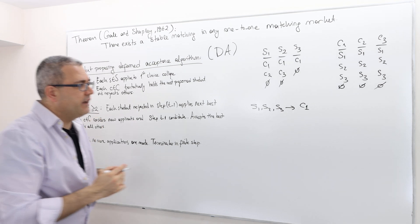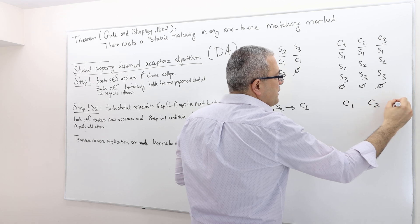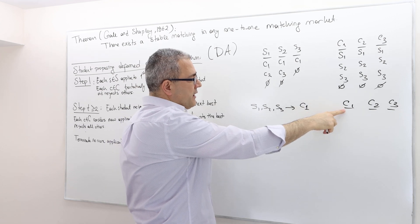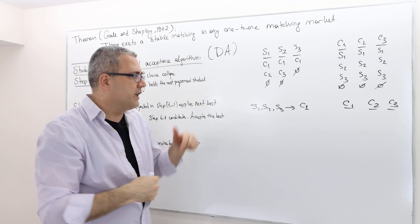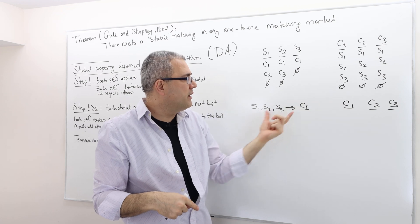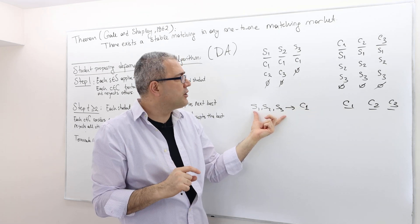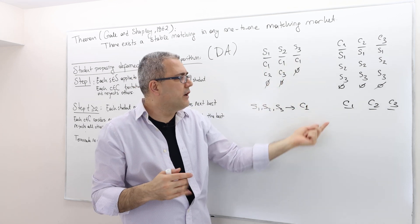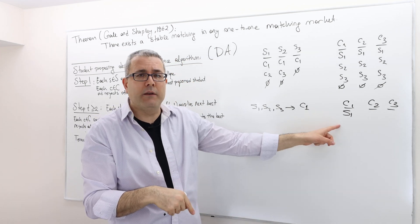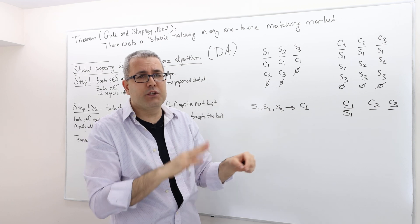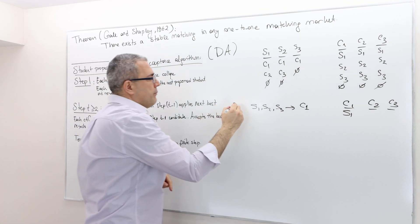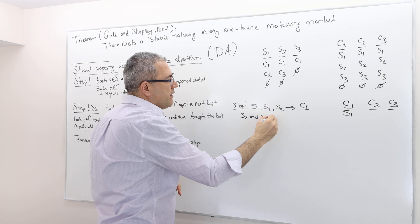At the first step, students apply to their first-best college, which in this case is college one. So other colleges did not receive anything. College one receives all three students' applications, but college one prefers student one. Therefore, student one should be admitted tentatively to college one, and the other students — student two and three — should be rejected. So this is step one: S2 and S3 are rejected.